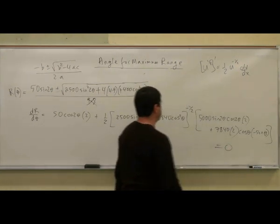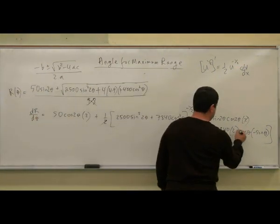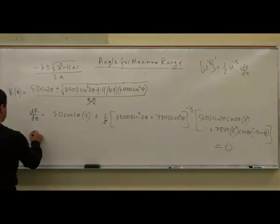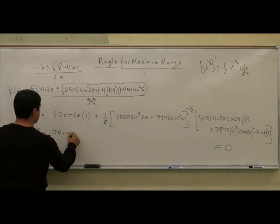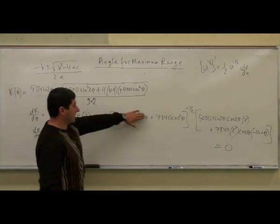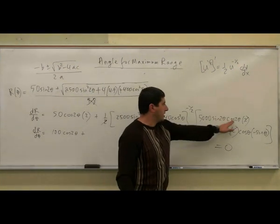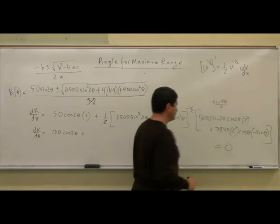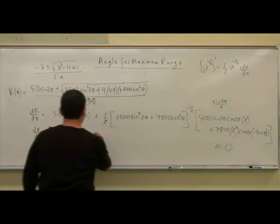And we set this equal to 0. One thing we can do is this 2 can cancel the other 2s, and we can clean it up. We can say dr/dθ equals 2 times 50 — that's 100 — cosine 2 theta, plus... this thing can go to the bottom because it's negative one-half. Then we can use the double angle sine formula, so it'll be sine of 4 theta divided by 2. This 2 will make this 2,500 again, so it'll be 2,500 sine of 4 theta.